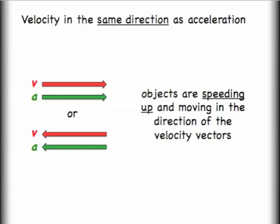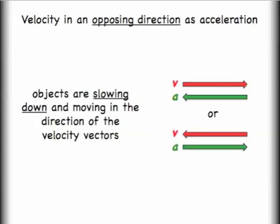This is a very crucial idea so let's quickly put it all together. If I have a situation where the velocity vector is in the same direction as the acceleration, the object is required to speed up. If I have the other situation where my velocity vector is in an opposing direction to the acceleration, I am required to slow down. This must happen and it's very important to remember this.